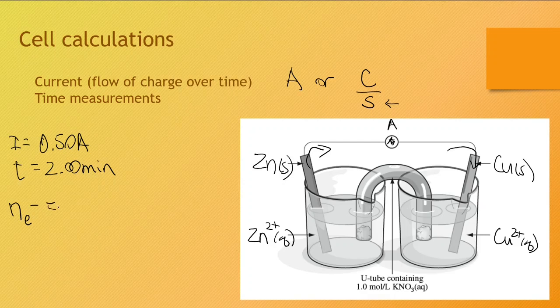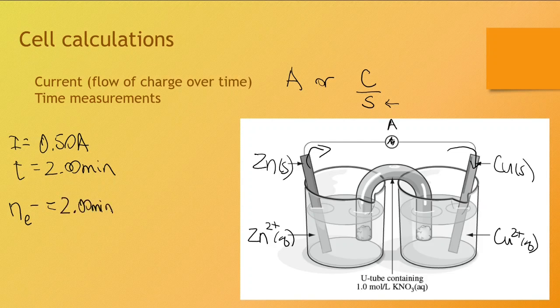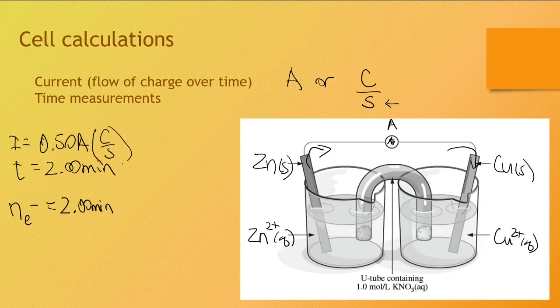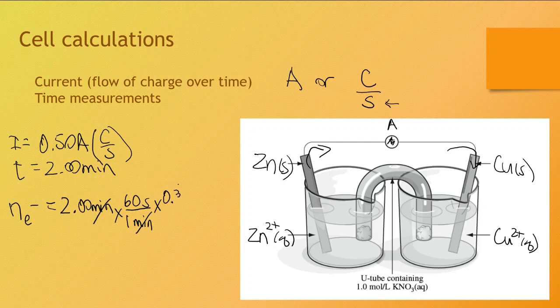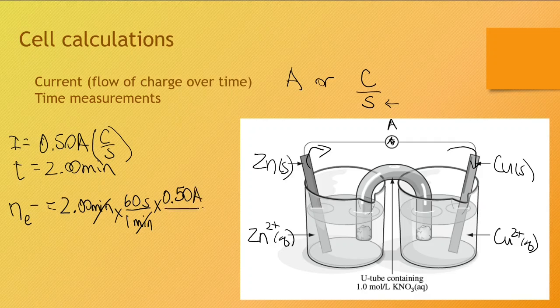In this case, we'd start with the given information with the singular unit. Recognize that the amps are really coulombs per second, so we have a mismatch in our units right now. I would first want to convert the minutes into seconds. Then use the current in order to cancel out the unit of time.